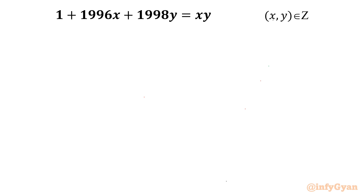Welcome back to Infigyan, my dear friends, in this very exciting video on Algebraic Challenging Equations. In this series we are going to solve one very interesting Diophantine equation today. The equation is 1 plus 1996x plus 1998y equal to xy. We have to find out all integer pairs x, y. So let us get started.